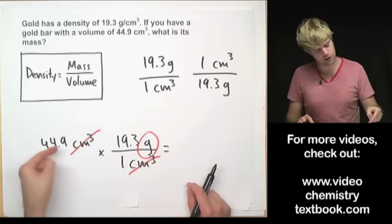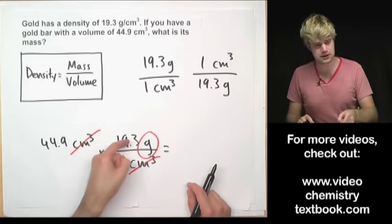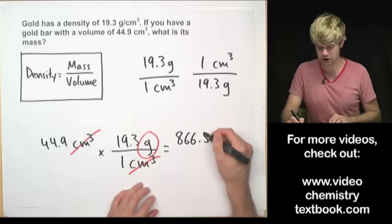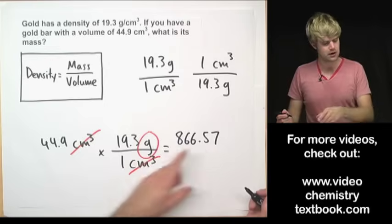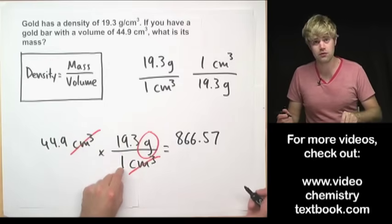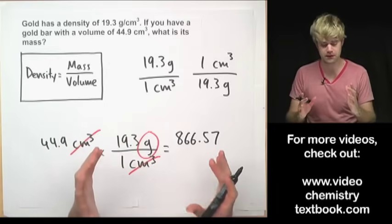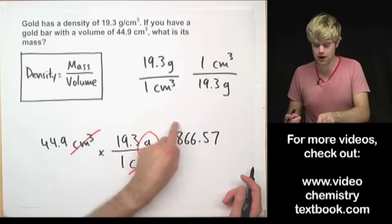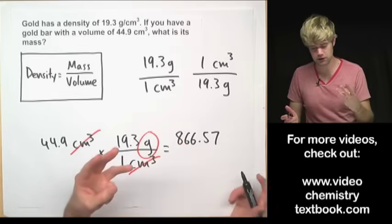Now I'm going to do 44.9 times 19.3 and I'm going to get 866.57. Three sig figs here, three sig figs here, and we have one which is a counting number, it's a definite number, so we don't worry about the significant figures here. So I'm going to round this number to three significant figures.